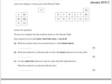Exam question: look at the diagram, it shows the periodic table. Each element can be used once, more than once, or not at all. Write the symbol of the most reactive group 1 metal shown. Well, this is something we haven't covered yet, but it will be down here — it will be potassium.